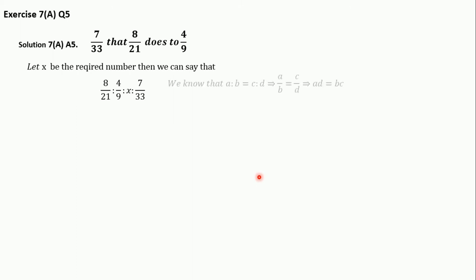We know that if a is to b equals c is to d, then a/b = c/d, and by cross multiplication that becomes ad = bc.